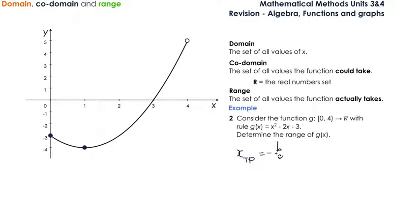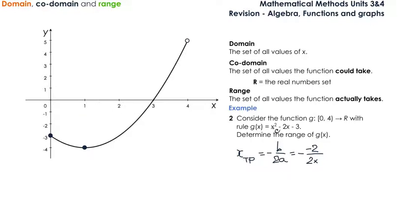The x-coordinate of the turning point is calculated using the formula −b over 2a. b is the coefficient of x, which is negative 2, so we have minus negative 2 over 2 times a. a is the coefficient of x squared, so it's 2 times 1. Two negatives make a positive, 2 divided by 2 is 1, so we get x equals 1, which is what we expected.